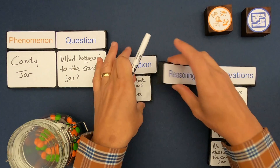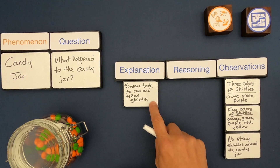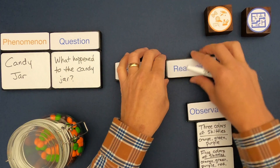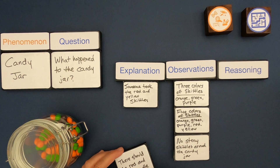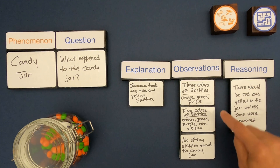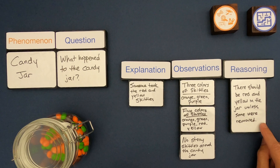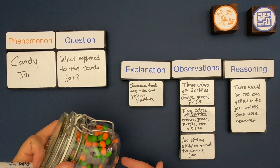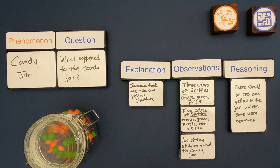Reasoning is a logical connection — how can I connect these observations to this explanation? My first reasoning addresses the two observations: I see a different set of colors in the candy jar than in the bag. That means there should be red and yellow in the jar unless some had been removed. Given that there are so many candies in the jar but the red and yellow are absent, that's good reasoning that someone took them.